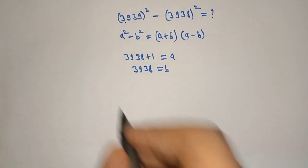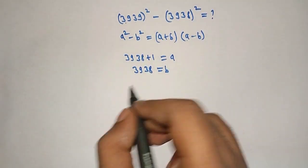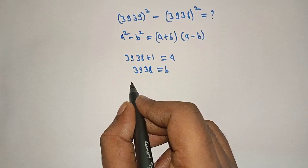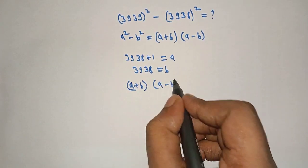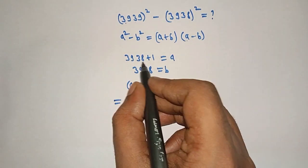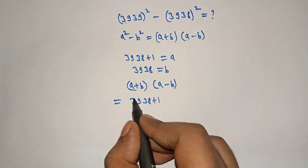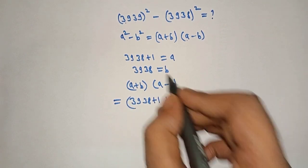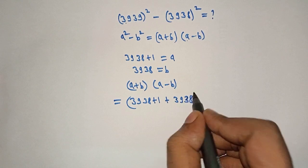Okay, now we will put this in this formula. a plus b into a minus b is equal to what is a here? 3938 plus 1. Plus what is b here? 3938. Okay.